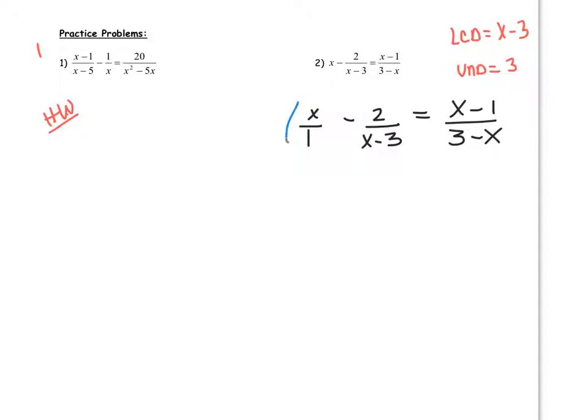So we're going to multiply this by x minus 3. And we're going to multiply this by x minus 3. And we're going to multiply this by x minus 3. So nothing cancels over here. So we're just going to leave this as x times x minus 3. In the middle, these cancel. So I'm just left with minus 2.